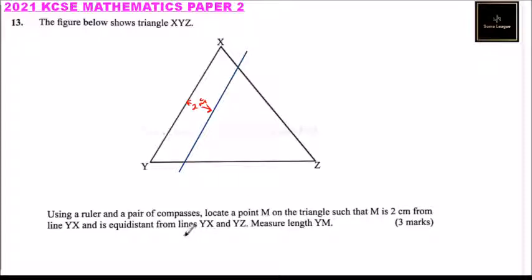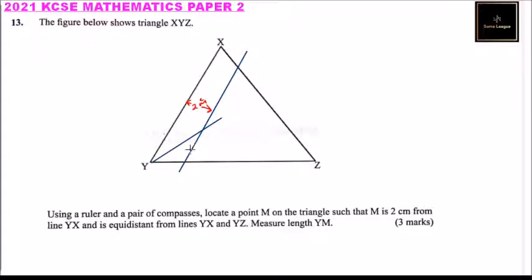Since we are told that M is equal distance from YX and YZ, if we want to achieve that, you need to bisect this line, so that M will be somewhere there. You must follow the instructions and use a ruler and a pair of compasses.